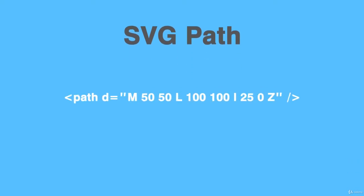At first you may think that this is very complicated, because after all you have this tag line that says 'path' and then we have 'd'. So every time we want to create a path in SVG, we put the 'path' tag and then inside we put the 'd' attribute — that's where we start putting together a string which will be our path that we want to draw.